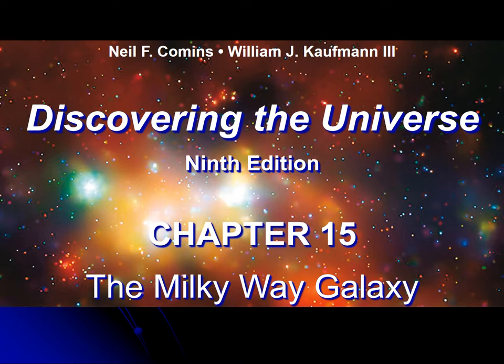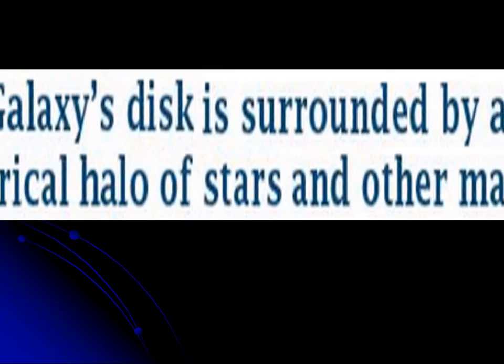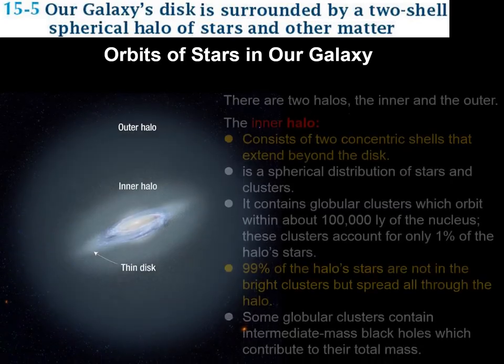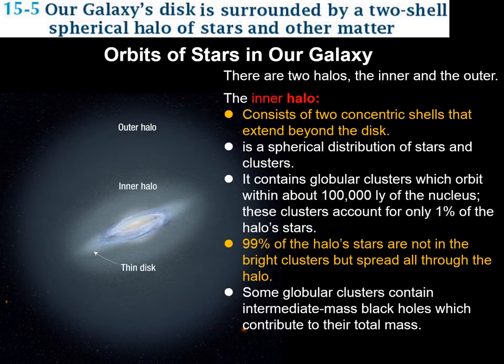In this video we're going to cover sections 15.5 and 15.6 from the book Cummings and Kaufman. In section 15.5 we're going to see that there are some stars around the Milky Way in what is known as the halos. The halos are basically two spherical regions in which there are stars.